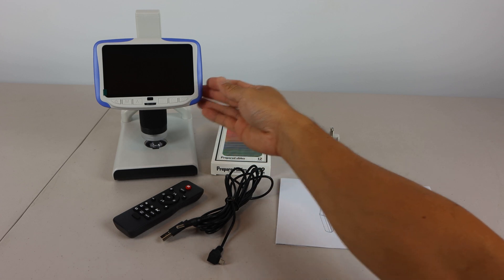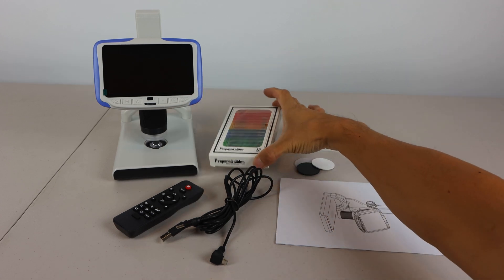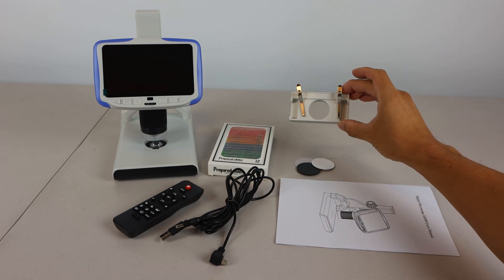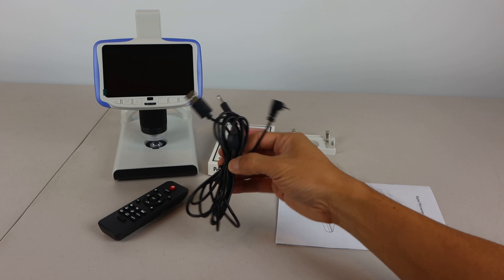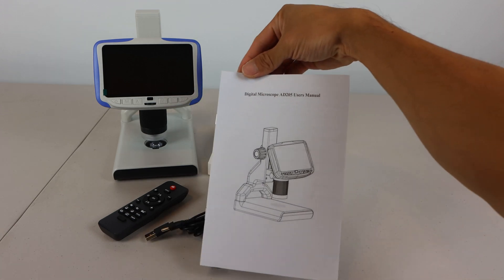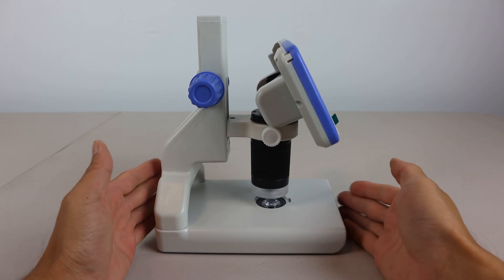You'll receive the microscope, a set of 12 prepared slides, stage clip block, three light filters (white, black, and translucent), a remote control, USB power cord with dual connectors, and an instruction manual.